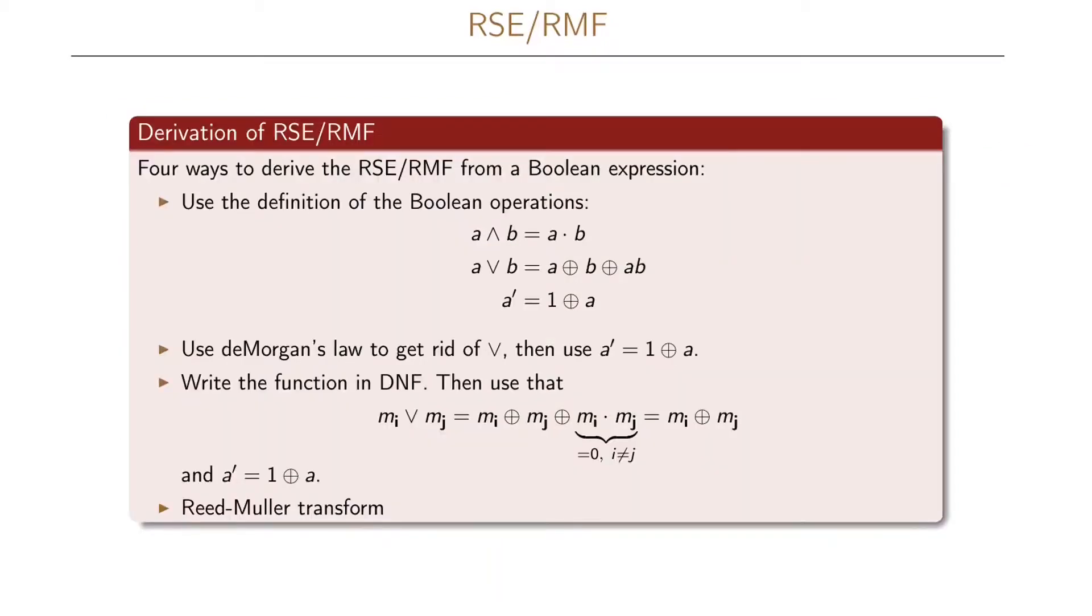So this ringsum expansion or Reed-Muller canonical form, that we denote RSE and RMF respectively, can be derived in several ways. One way is to use the definition of the Boolean operations, which means that we replace all a and b by a times b, and we replace all a or b with a plus b plus ab, and we replace all a prime, that is the complement of a, with 1 plus a. Another way of deriving this expression is to use de Morgan's law to get rid of all our or terms, and then we use the fact that a prime equals 1 plus a. The third variant that we can use is to write the function in the disjunctive normal form, and then after that we use the fact that the or of two of our min terms will be the same as the sum of these two min terms in our Boolean ring, because when we multiply two min terms we will always have 0.